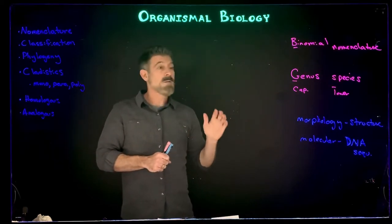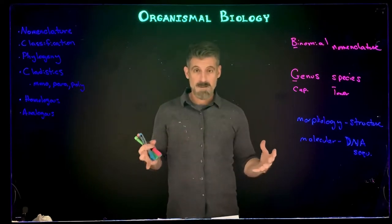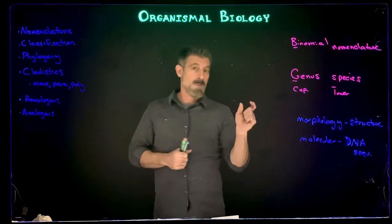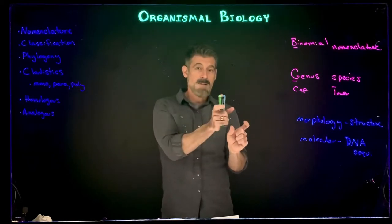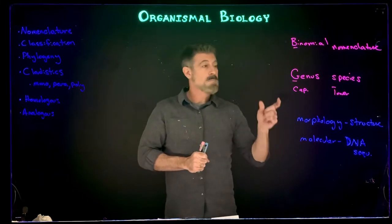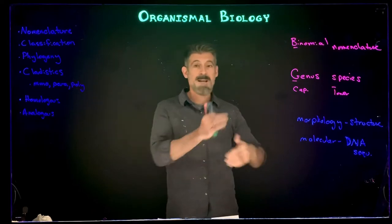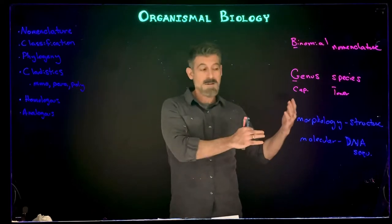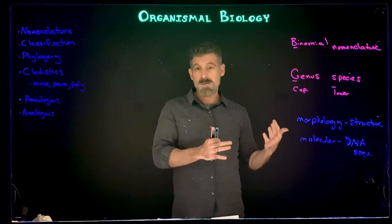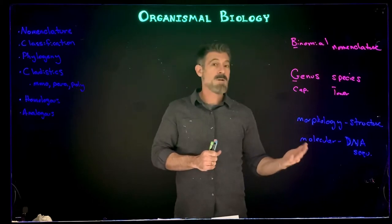Keep in mind one of the problems with molecular classification is that we don't typically look at an entire genome of one organism and compare it to another's entire genome. We pick specific genes and compare just those sequences. Over time, people have found that certain genes used for classification are poor indicators of relationships, and have selected different genes — and sometimes found the first classification wasn't very good. This is the type of thing that continues to change.